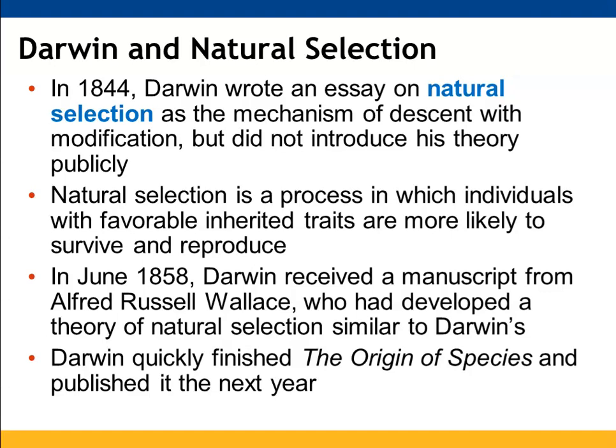When Darwin returned from his travels, he wrote an essay on natural selection as the mechanism of evolution — descent with modification — but he didn't publicize this theory widely. Natural selection is a process in which individuals that have more favorably inherited traits are more likely to survive and reproduce. About 14 years later, he received a manuscript from another naturalist, Alfred Russel Wallace, whose natural selection theory was quite similar to Darwin's. Darwin finally published The Origin of Species, and he is given credit for the idea of evolution via natural selection.